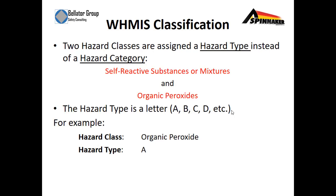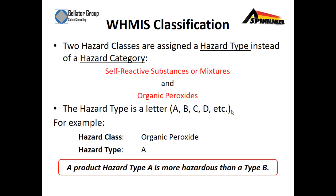Two hazard classes are assigned a hazard type instead of a hazard category: self-reactive substances or mixtures and organic peroxides. The hazard type is assigned by a letter — A, B, C, or D. For example, a hazard class of organic peroxide could be assigned hazard type A rather than a number. A product hazard type A is more hazardous than type B.